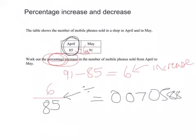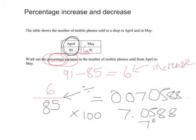And to make this into a percentage, have a think of what that would mean. To make it into a percentage, we times by 100, which is 7.0588, which is 7% increase.